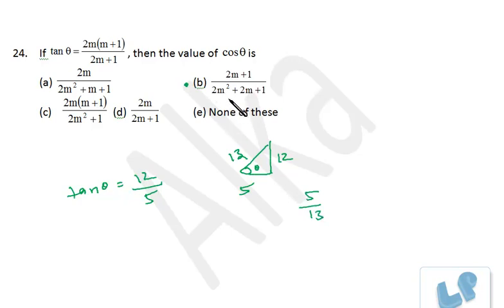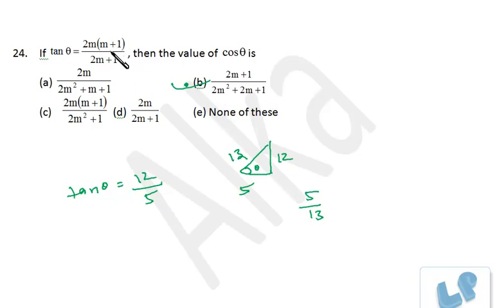Now let's verify using 2m+1. If I put m as 2: 2 twos are 4, 2 eights are... 8 plus 4 is 12, and plus 1 is 13. As simple as that. So if you don't want to work with variables, just take a comfortable value. I'm sure you understand.